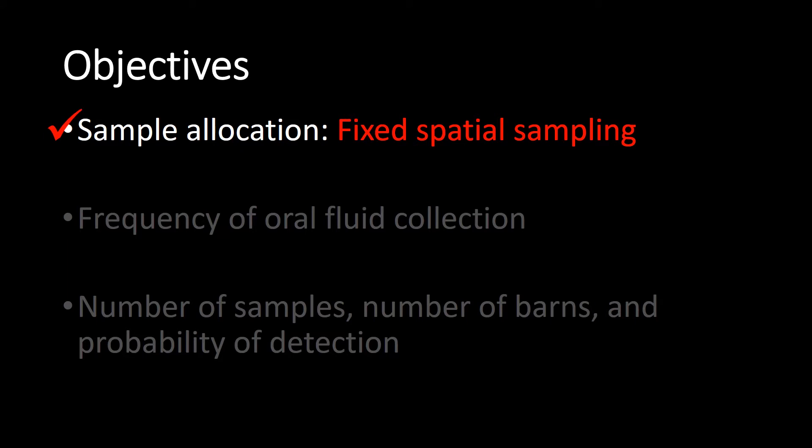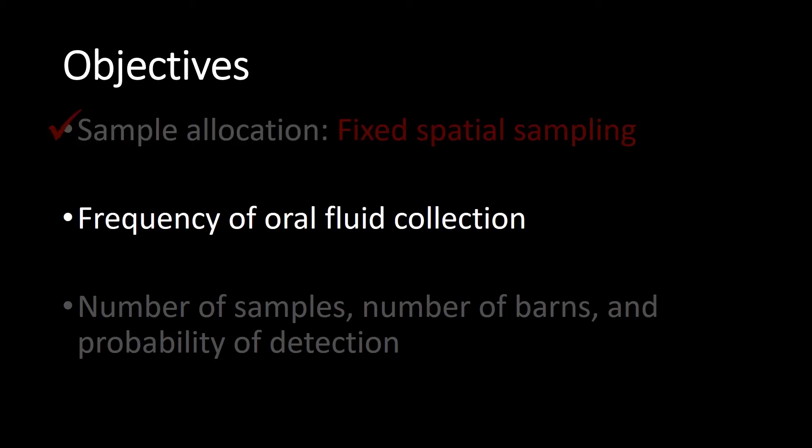So far, this video has demonstrated that pens in a barn should be sampled using fixed spatial sampling because of the spatially dependent nature of disease spread. Other considerations when surveying a disease within a population are the frequency of oral fluid collection, sample size, and probability of detection.